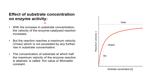The next factor is the effect of substrate concentration on enzyme activity. With the increase in substrate concentration, the velocity of the enzyme-catalyzed reaction increases. However, the reaction reaches a maximum velocity which is not exceeded by any further rise in substrate concentration.